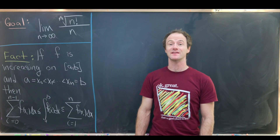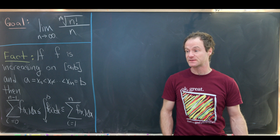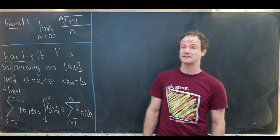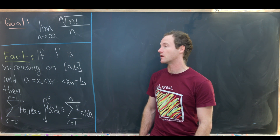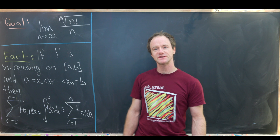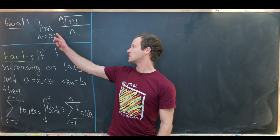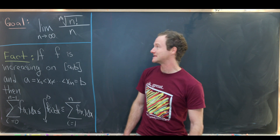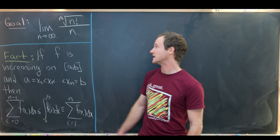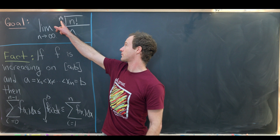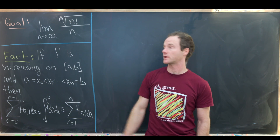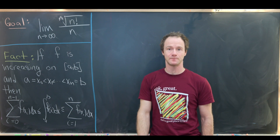Here we're going to compute a limit by exploiting lots of nice tricks and facts from Calculus 2. In particular, we want to look at the limit as n goes to infinity of the nth root of n factorial over n.